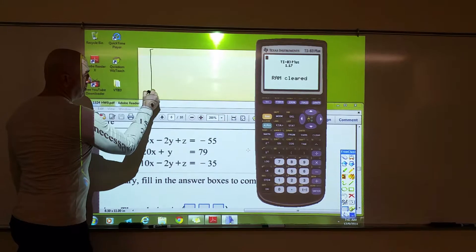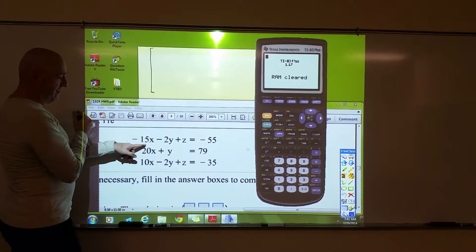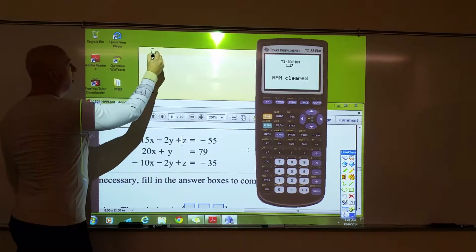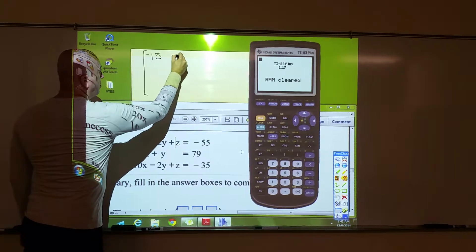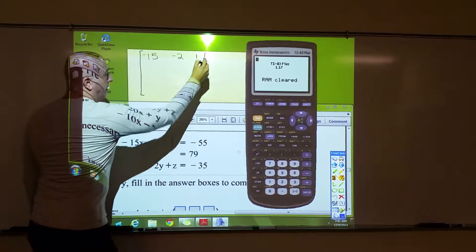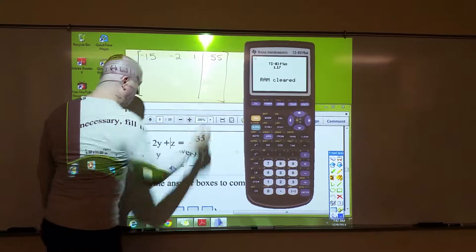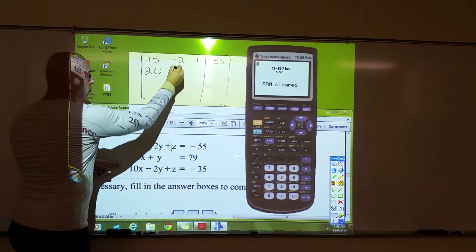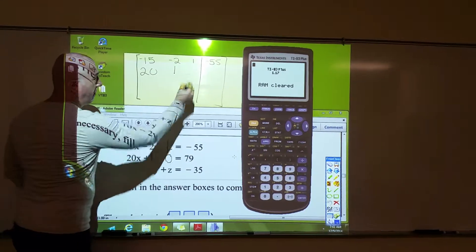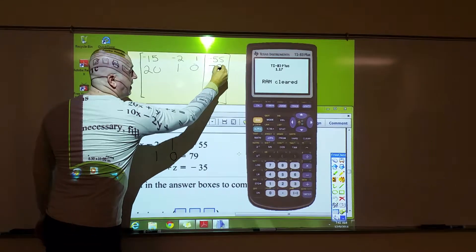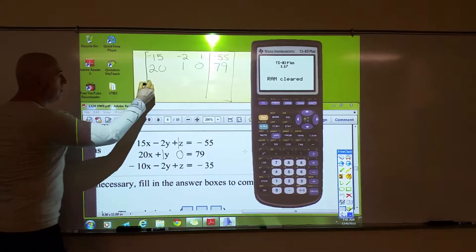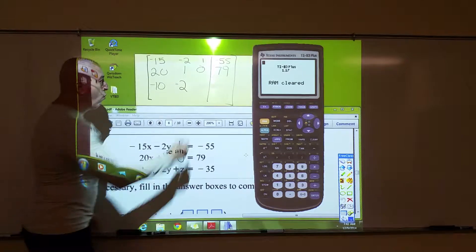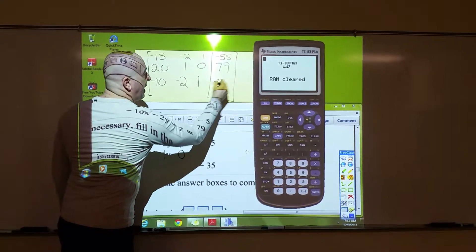And I'll do that right here. So, negative 15, negative 2, 1, negative 55. Second equation, 20, 1, 0, 79, and the third one, negative 10, negative 2, 1, and negative 35.